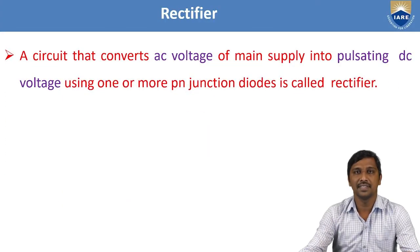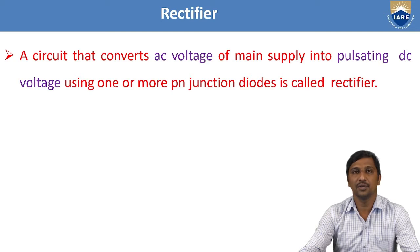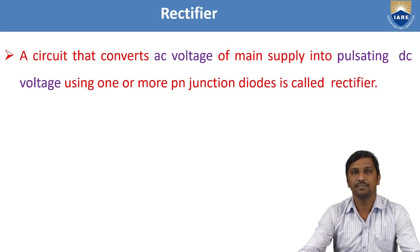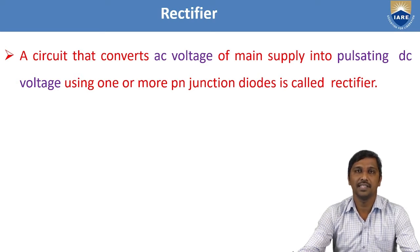Before going into the bridge rectifier, first we will see what is a rectifier. A rectifier is a circuit that can be used to convert the AC signal to the pulsating DC signal by using the PN junction diode.